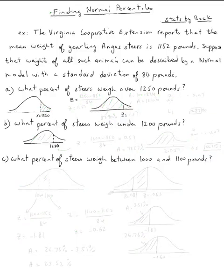The topic is finding normal percentiles. Let's do this example. The Virginia Cooperative Extension reports that the mean weight of yearling Angus steers is 1152 pounds. Suppose that weight of all such animals can be described by a normal model with a standard deviation of 84 pounds.